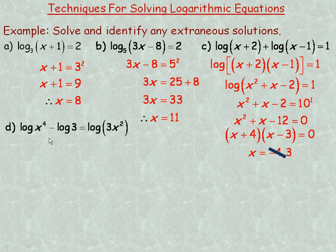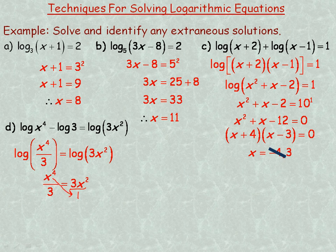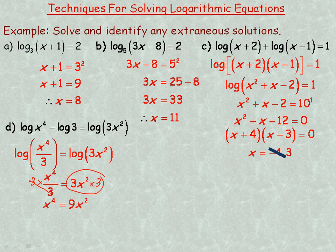On to example d. Here I have a difference of two logarithms, so I rewrite that as one single logarithm using the quotient law: the logarithm of x to the fourth over 3 equals the logarithm of 3x squared. For these two logarithms to be equal, x to the fourth over 3 must equal 3x squared. Multiplying both sides by 3 gives x to the fourth equals 9x squared.